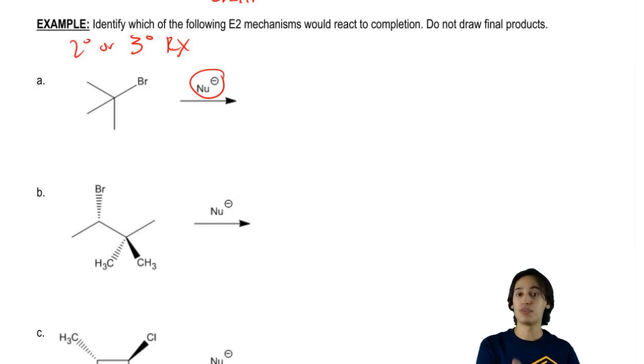First of all, do the same thing that we did for the beta hydrogen exercise. Figure out how many different ones we have. But then on top of that, figure out how many of those are actually anti-coplanar. And that's going to be the number of possible products for E2. All right, so go ahead and try it with the first one and then I'll explain it.